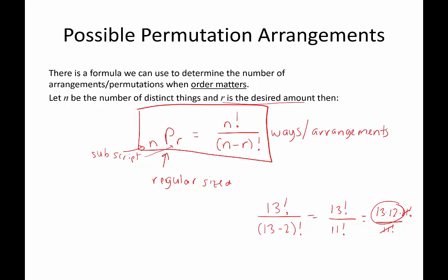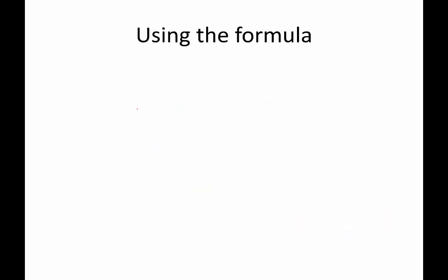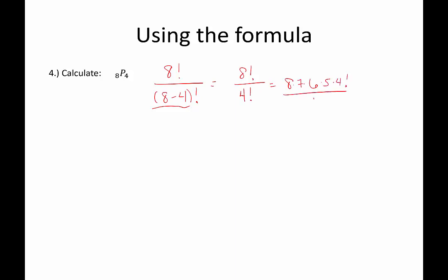Now let's look at examples of simplifying permutations using the formula. Eight permuted four ways: that's 8 factorial divided by (8 minus 4) factorial, which is 8 factorial over 4 factorial. Expanding gives us 8 times 7 times 6 times 5 times 4 factorial divided by 4 factorial — those cancel, leaving 8 times 7 times 6 times 5, which equals 1,680.